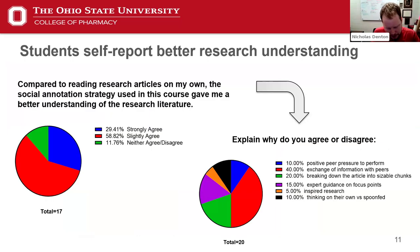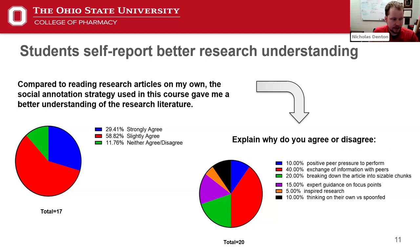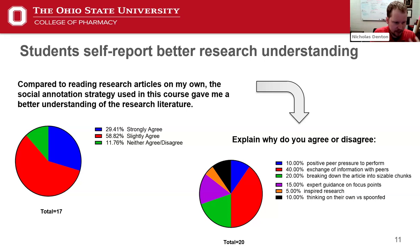When we surveyed students on their perspective of Hypothesis and the social annotator, we found no disagreement with the statement that compared to reading research articles on their own, the social annotation strategy gave them a better understanding of the research literature. When students explained why they agreed, the majority said the exchange of information with peers helped them better understand the paper — that peer-led collaboration — and also the expert guidance on focus points and breaking down the article into manageable chunks.